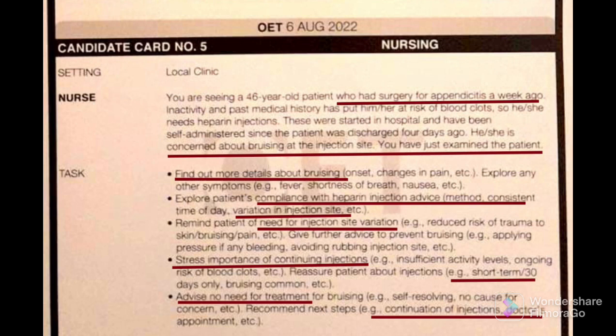Tell the patient: 'Mr. Williams, now I can clearly understand that this is the reason for your bruising.' For the next task — reminding the patient about injection site variation — say: 'It is essential for you to change the site of injection to reduce the risk of trauma to the skin. The bruising has happened because of using the same injection site. If you change the site, the pain will also be relieved.' Further advise: 'Please apply pressure if there is any bleeding and please avoid rubbing the injection site after self-administration.'